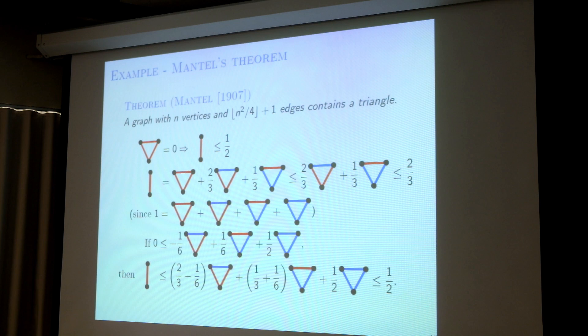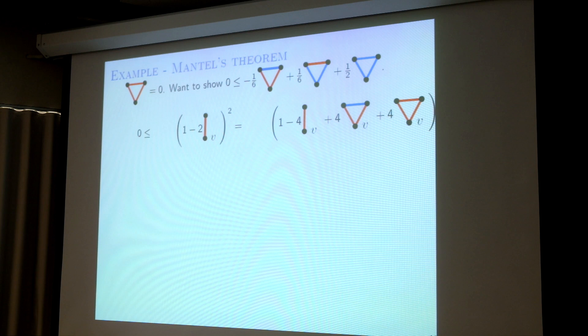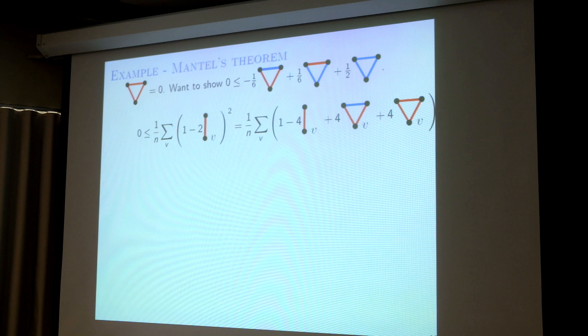Flag algebra gives you a way to find and prove this inequality. How to prove it? The most obvious way to get something greater than or equal to zero in mathematics is to take a square. You take the square of anything — it is at least zero. So I take this square: one minus two times the red edge, fixed at vertex v. For any vertex v it is greater than or equal to zero. And on average it is still greater than or equal to zero, because it is a square.